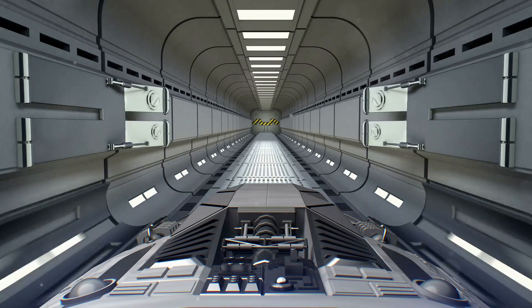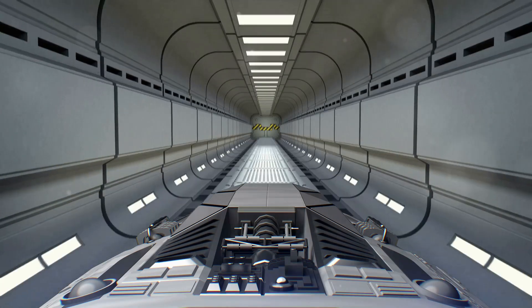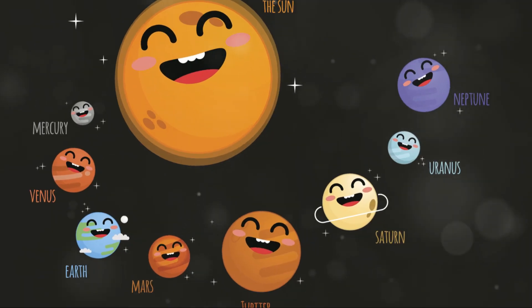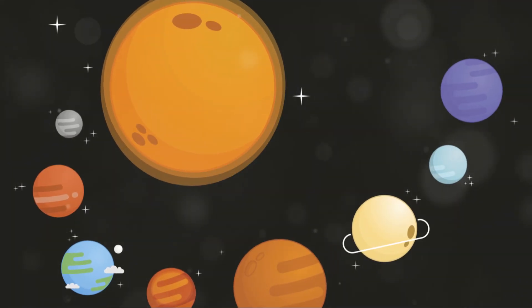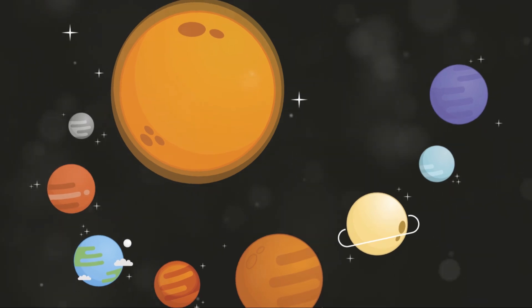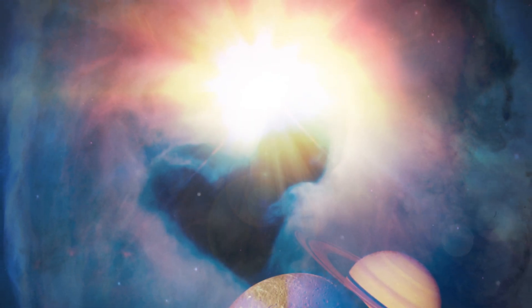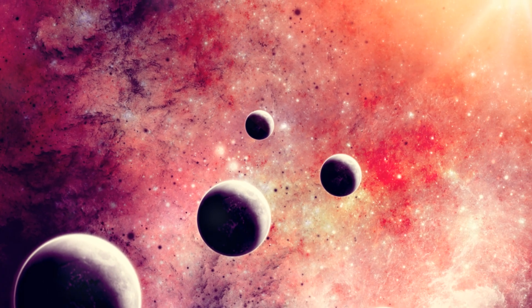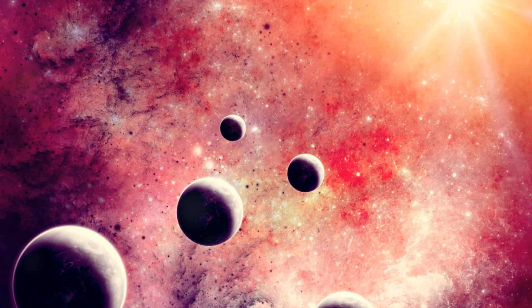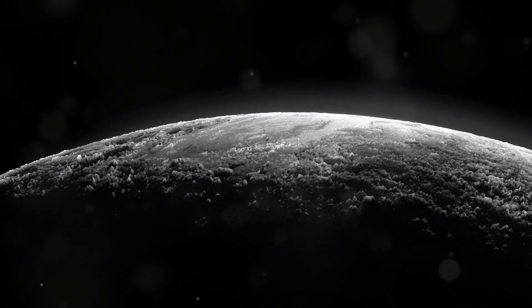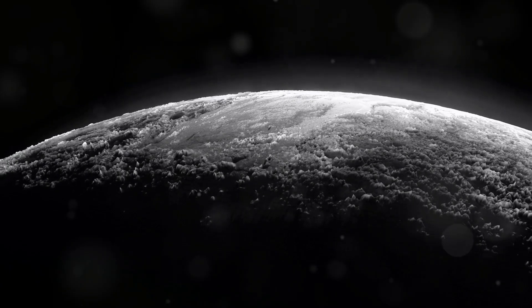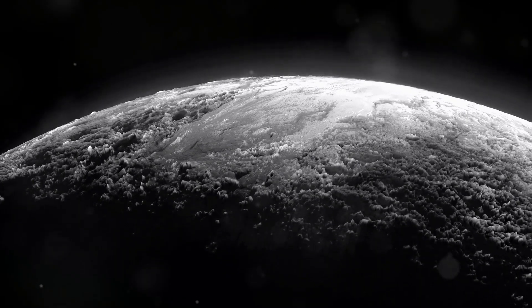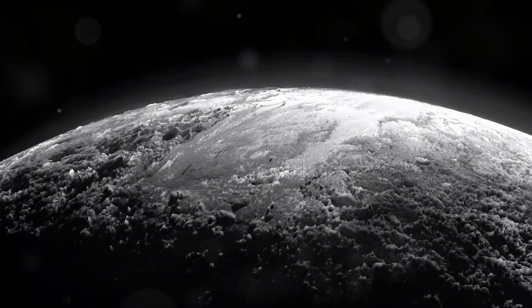Neptune: This blue planet is the farthest from the sun, and it's also super windy. Its atmosphere is filled with strong winds and giant storms. How cool are all those planets? Each one is unique and special in its own way. From the scorching heat of Venus to the icy rings of Saturn, our solar system is full of wonders. Maybe one day you can visit them all. The possibilities are endless in our awesome solar system.